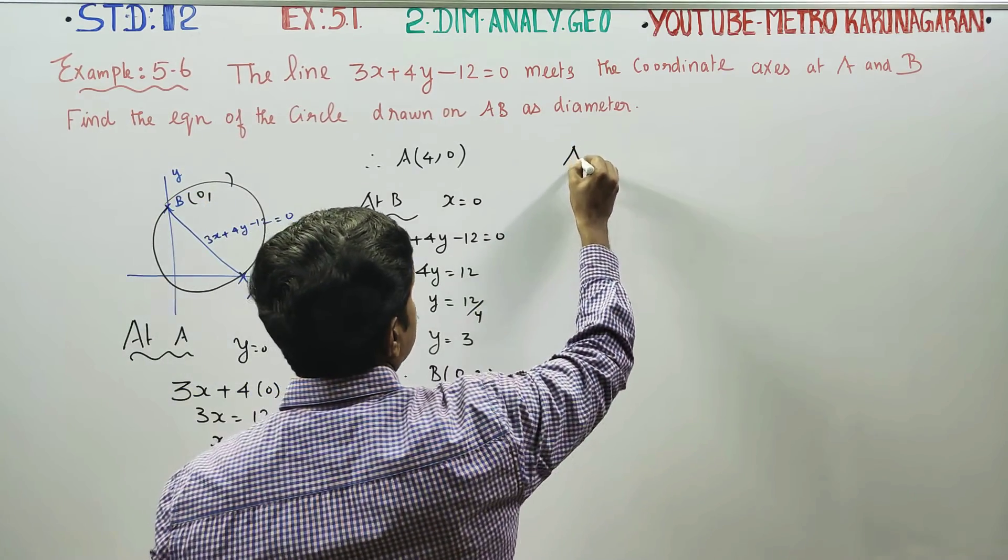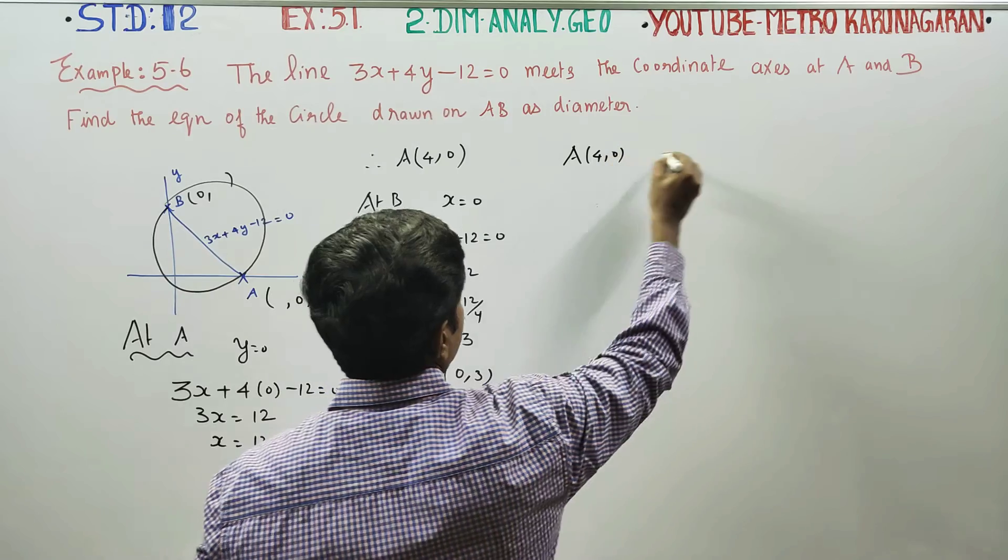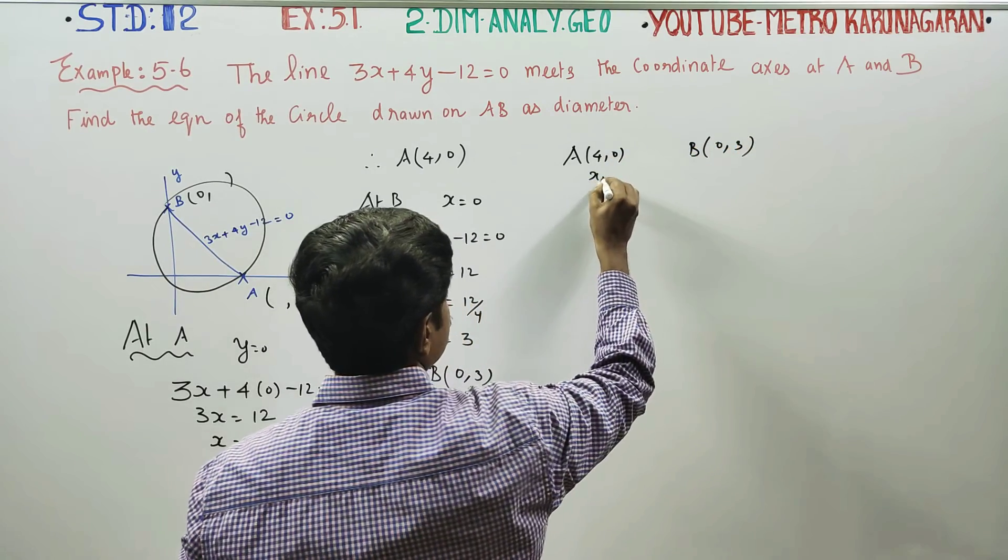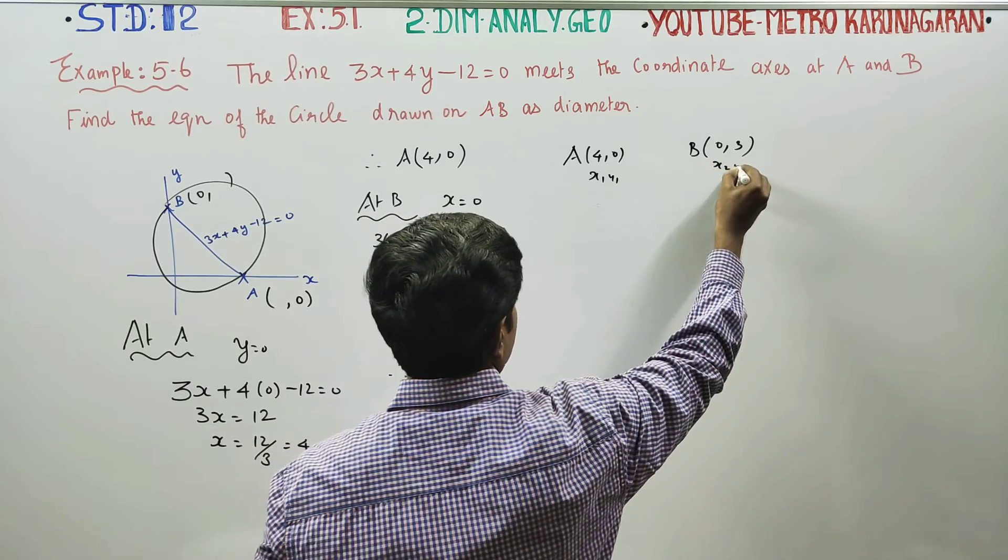Point A is (4, 0), which gives us x₁ = 4, y₁ = 0. Point B is (0, 3), which gives us x₂ = 0, y₂ = 3.